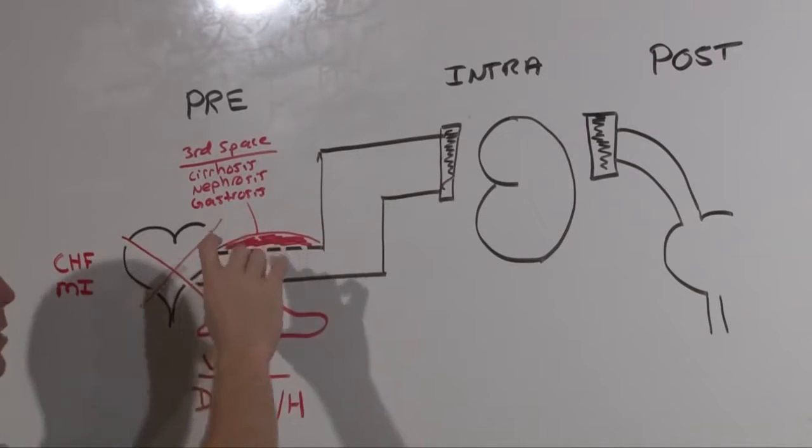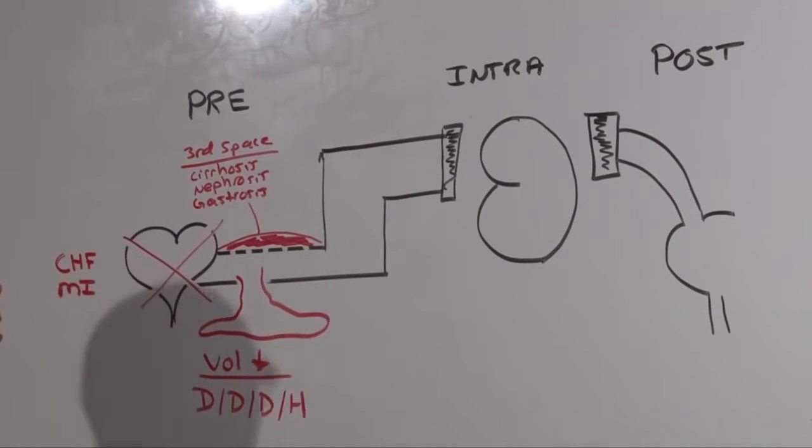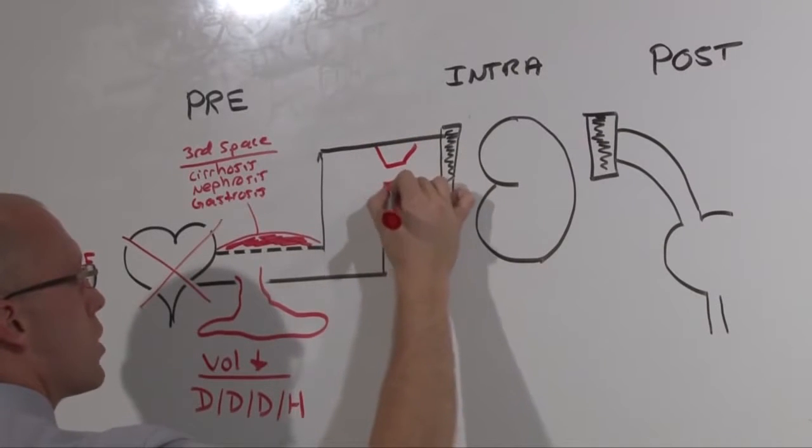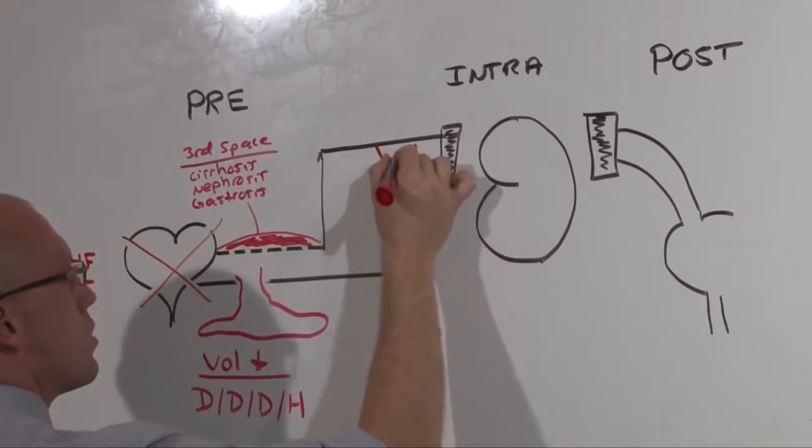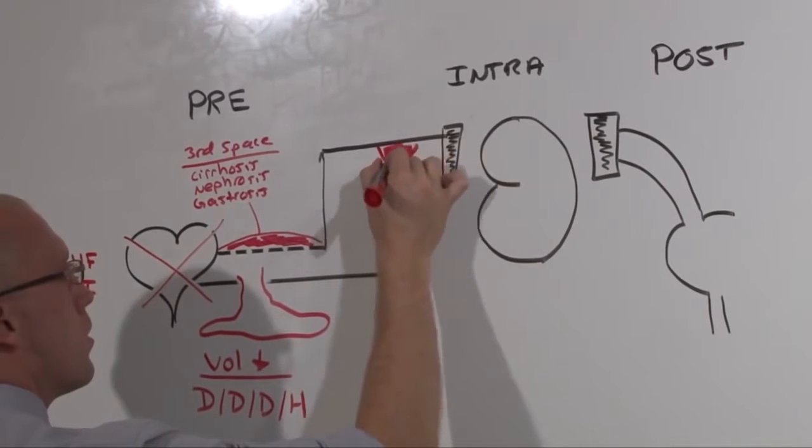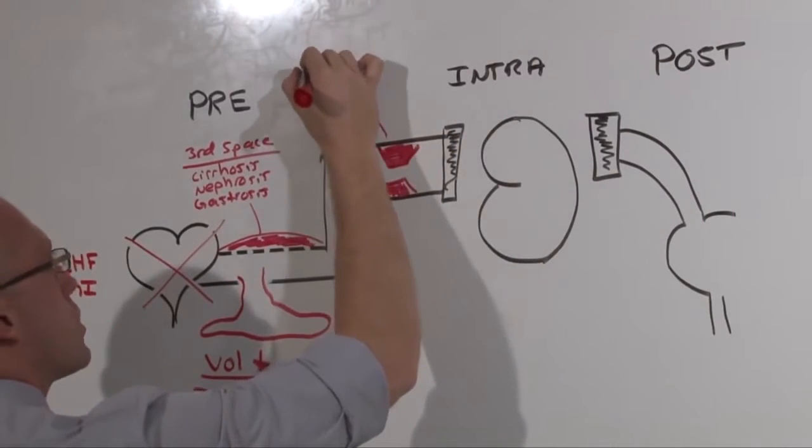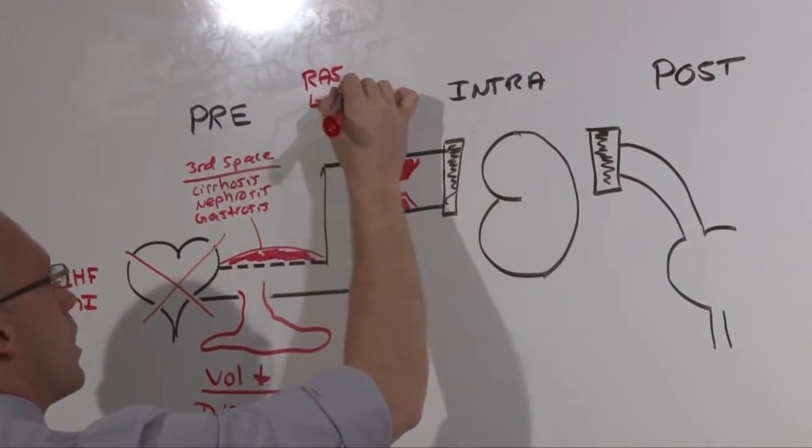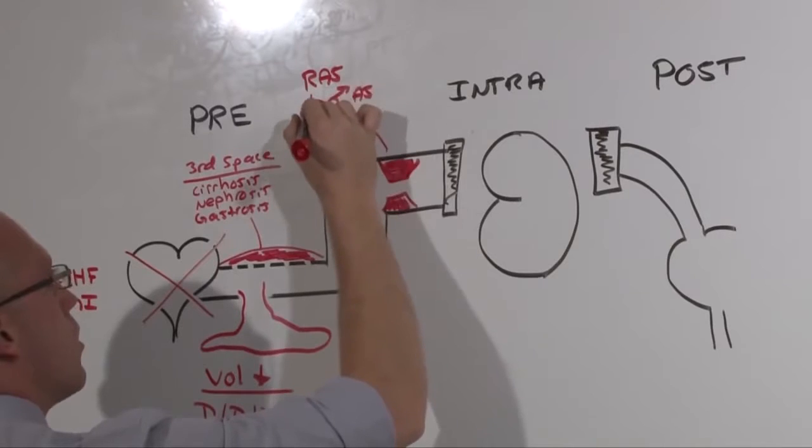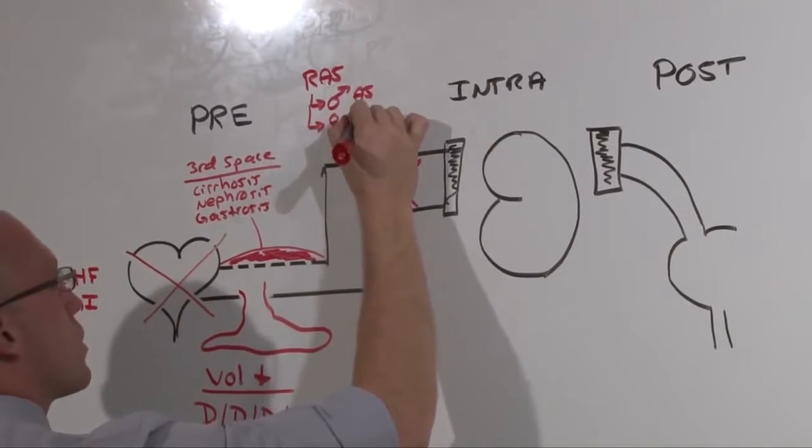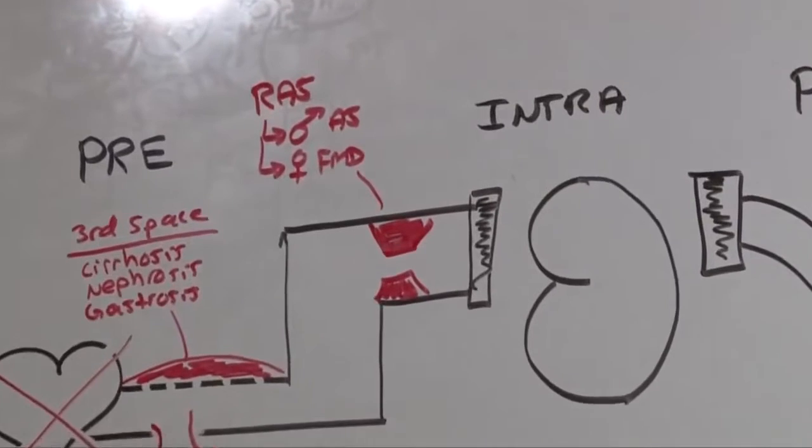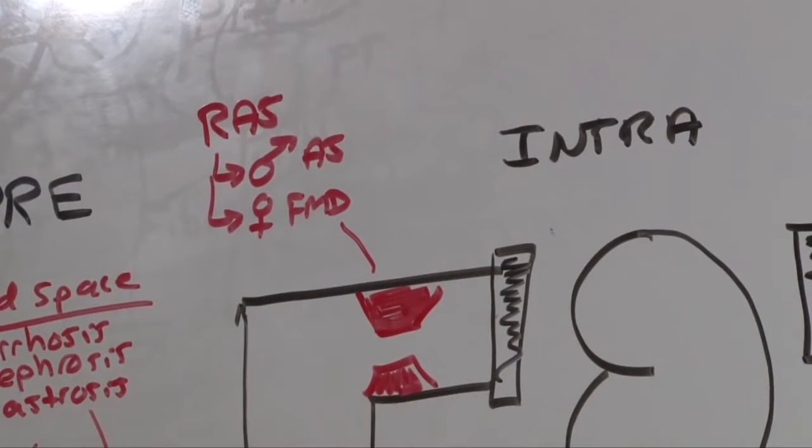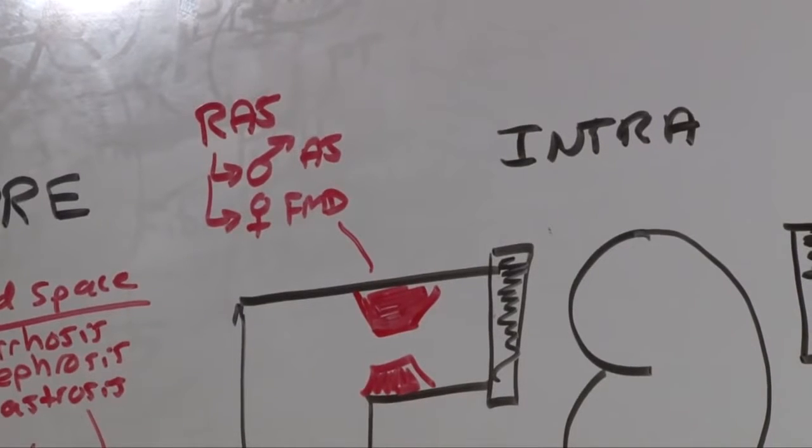You can have clogged pipes. Any sort of blockage in the renal artery is going to lead to a decreased flow. And this is going to be renal artery stenosis. Either it's going to be an old man with atherosclerotic disease or a young woman who has fibromuscular dysplasia. Of course you can add on cholesterol emboli that go into the renal vessels and block up the arteries.